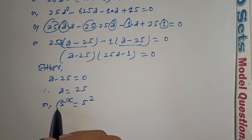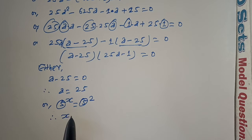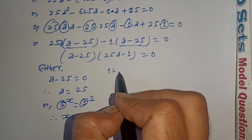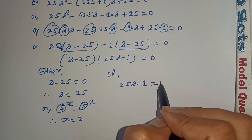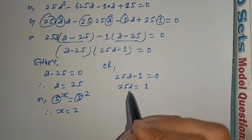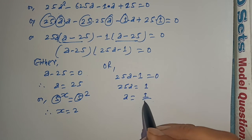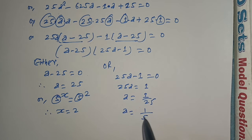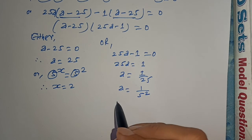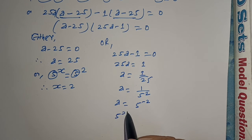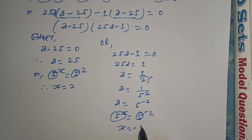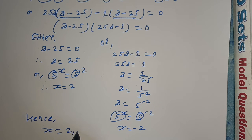So a equals 25 or a equals 1 upon 25. Since a equals 5 to the power x: if 5 to the power x equals 25, then x equals 2. If 5 to the power x equals 1 upon 25, then 5 to the power x equals 5 to the power minus 2, so x equals minus 2. The value of x is minus 2.